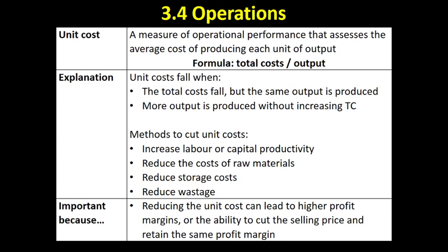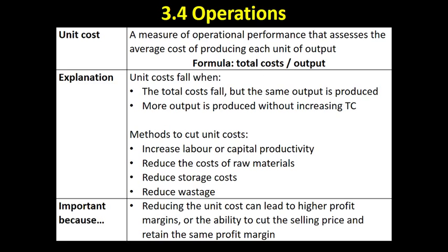Looking at the formula, we can understand how we can cut unit costs, which is likely to be our target for obvious reasons. We can cut unit costs by cutting our total costs but producing the same number of units of output. Or, if we can produce more units of output and keep our total cost of production the same, the average cost of each unit will fall.